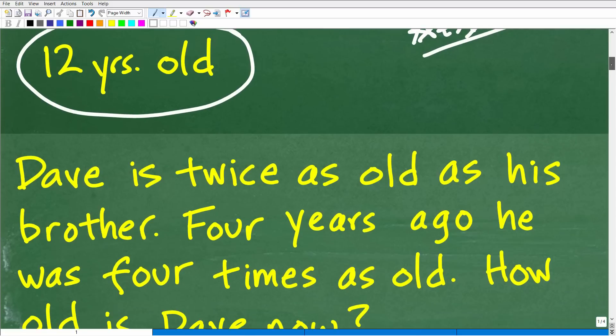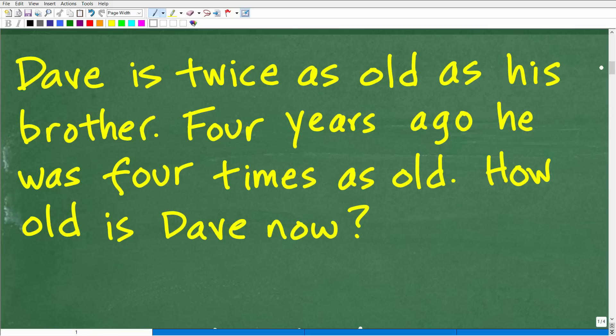The first thing you need to keep in mind when solving any math word problem is you've got to read the problem more than once. Oftentimes students just read a problem one time and think they know what to do. That's the worst thing you could do. Read the problem the first time and just get a basic sense of what's going on. The second time, start pulling information out. The third time, you need to understand what the question is. We have Dave and his brother, and we want to know how old Dave is right now. We're going to have to model this situation using algebra because we're looking for an unknown value. A good clue in mathematics is when you're trying to find an unknown value, you need to use a variable.